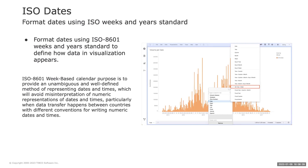In Spotfire 12.2, date axes in visualizations can now be formatted using ISO weeks and years standard to display dates in charts. The purpose of this standard is to provide an unambiguous, well-defined method for representing dates to avoid misinterpretation, especially when data transfers between countries with different conventions. ISO week is now available as an additional formatting option in visualization axes.